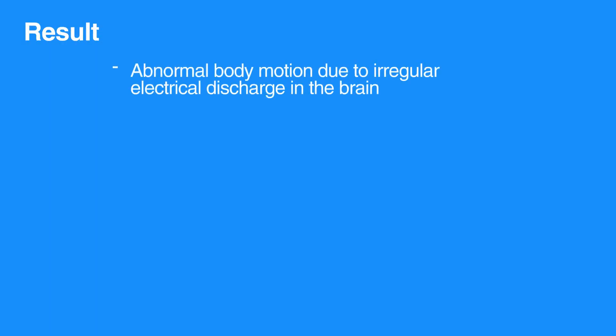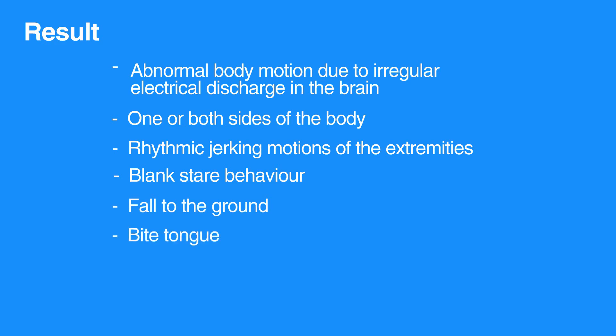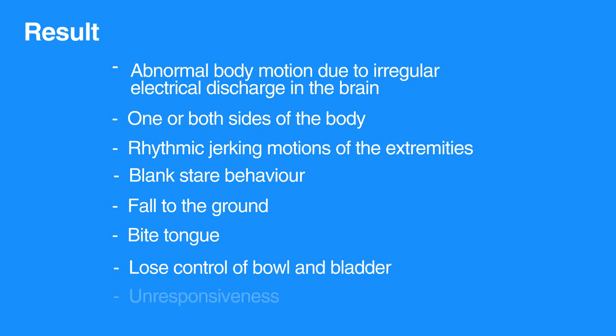Seizures result in abnormal body motion due to irregular electrical discharge in the brain. Seizures can involve one or both sides of the body. Many seizures result in rhythmic jerking motions, but some may result in a blank stare type of behavior. An individual having a seizure may fall to the ground, bite their tongue, and lose control of their bowel and bladder. Seizures are often accompanied by a brief period of unresponsiveness.